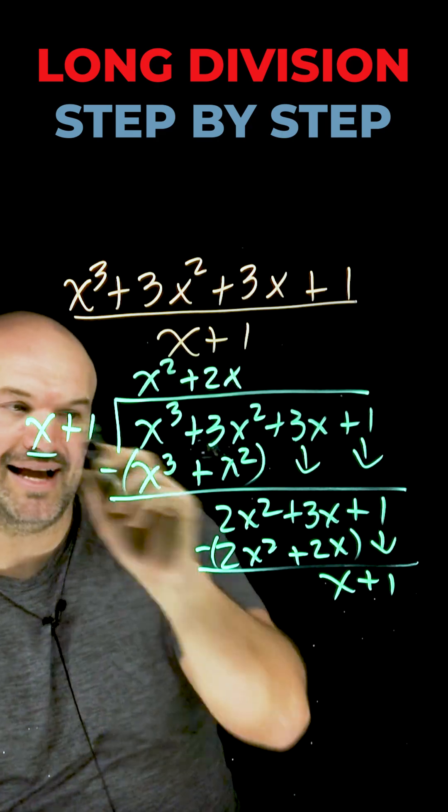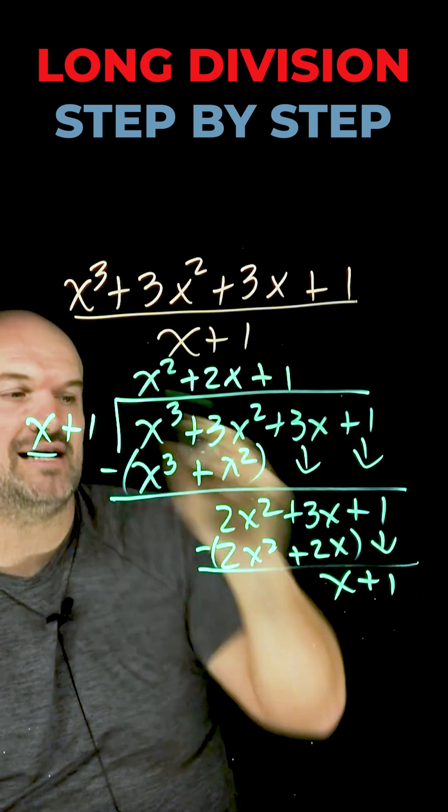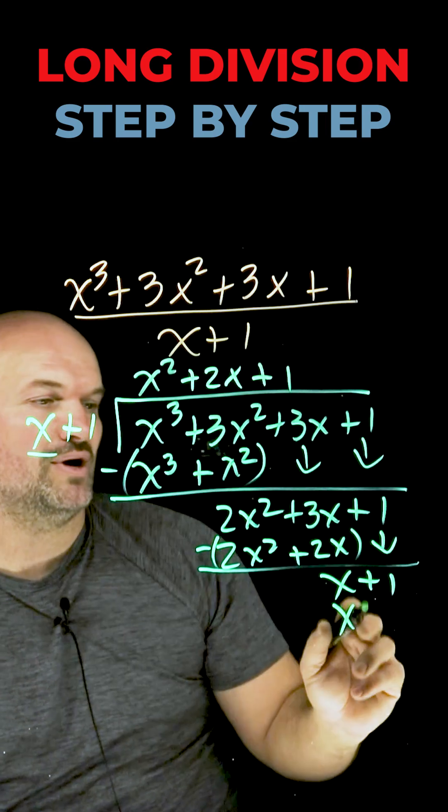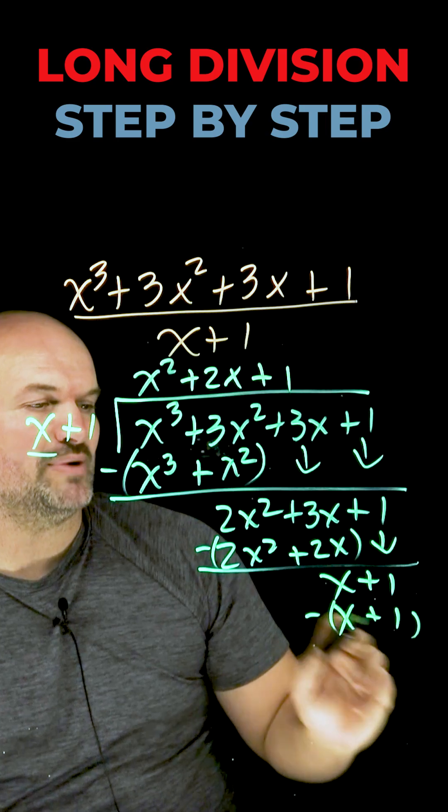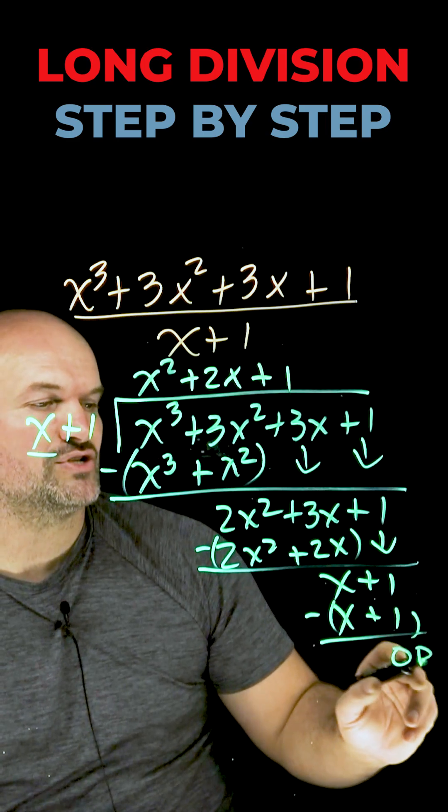On to round 3. x divides into x. That's going to be a positive 1. 1 times x is going to be x. 1 times 1 is going to be a positive 1. Group and subtract. You're going to get a 0, which is going to be your remainder.